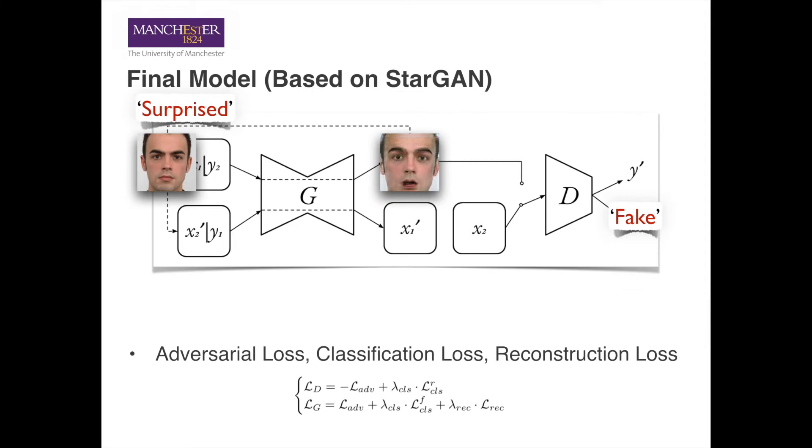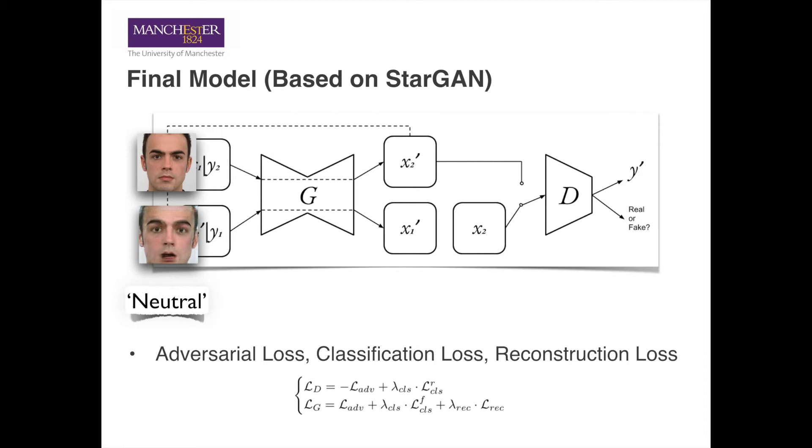Moreover, we want to make sure the generated image does not have a different identity. To do so, we take the generated image with its original expression as the condition and put them back into the generator.